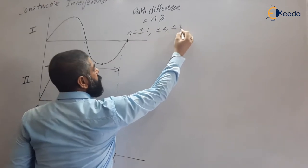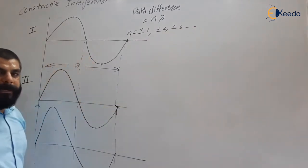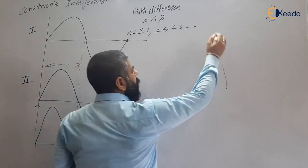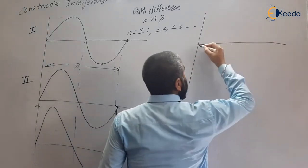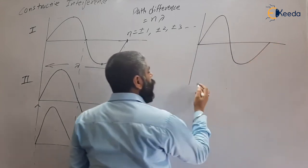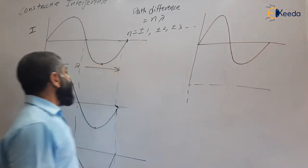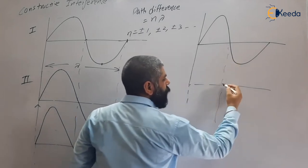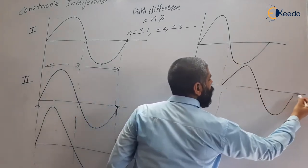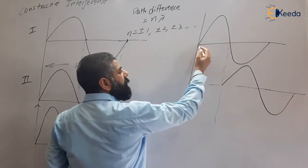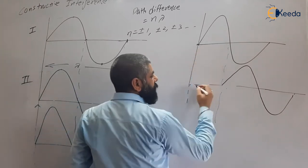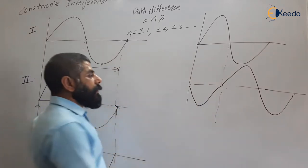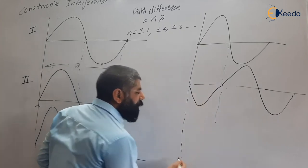For constructive interference, n can be plus or minus 1, plus or minus 2, plus or minus 3, and so on. Now instead of getting a very high amplitude waveform, we can also get a very low amplitude waveform. Suppose we superimpose waveform one with a waveform shifted by lambda by 2. Because the waveform extends from minus infinity to infinity, the path difference between these two is lambda by 2.